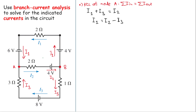All the currents form a counterclockwise loop — that will be loop one. Here, all the currents form a clockwise loop — that will be loop two. It will be very useful to label the polarity of the components. For the batteries, the long terminal is positive and the short terminal is negative.